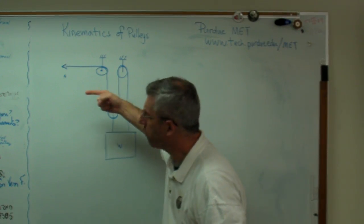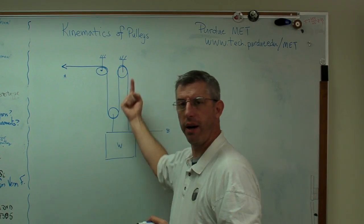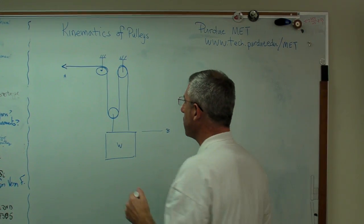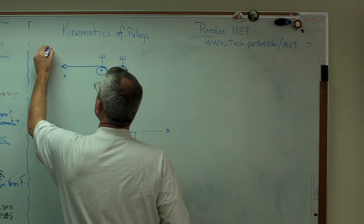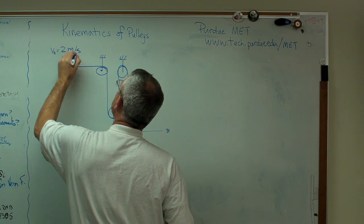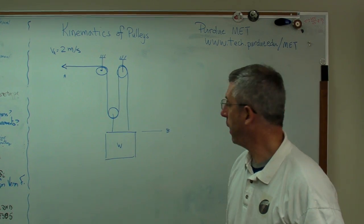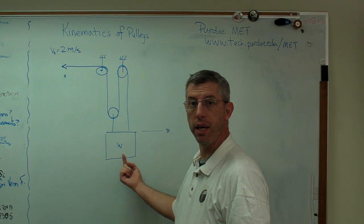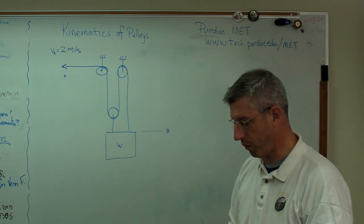If we're pulling the end of the rope that way, how fast is this weight going up? It's a good thing to know. So let's say VA equals 2 meters per second. How fast is VB? What's the number for VB?